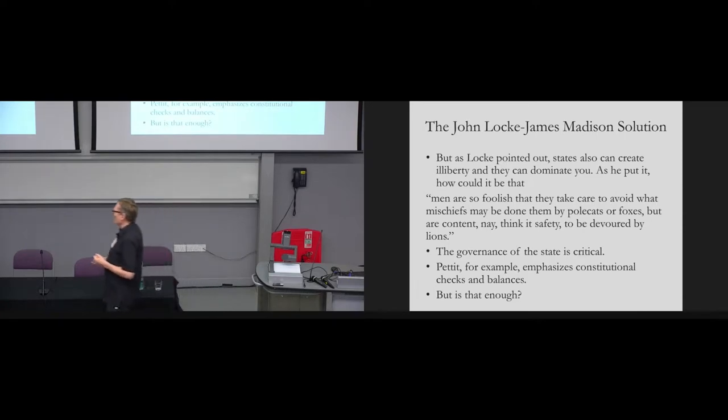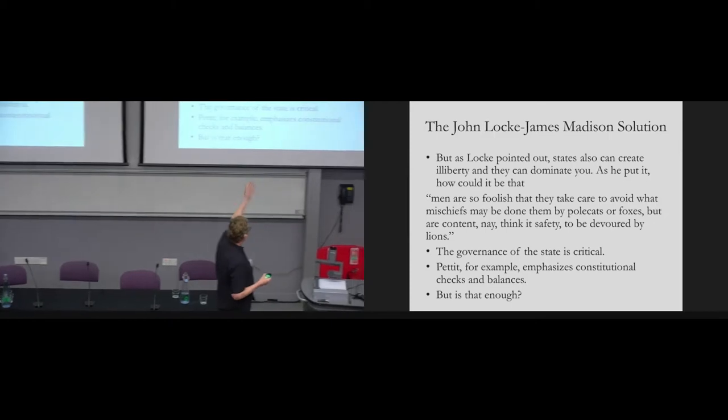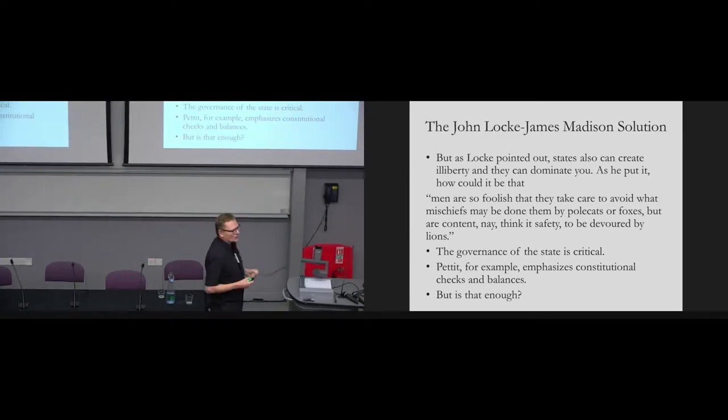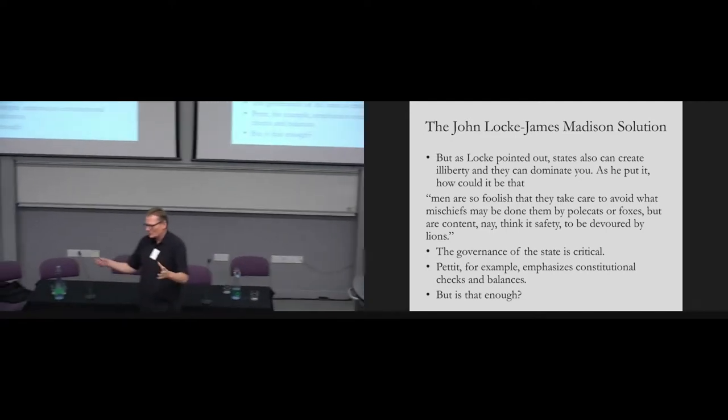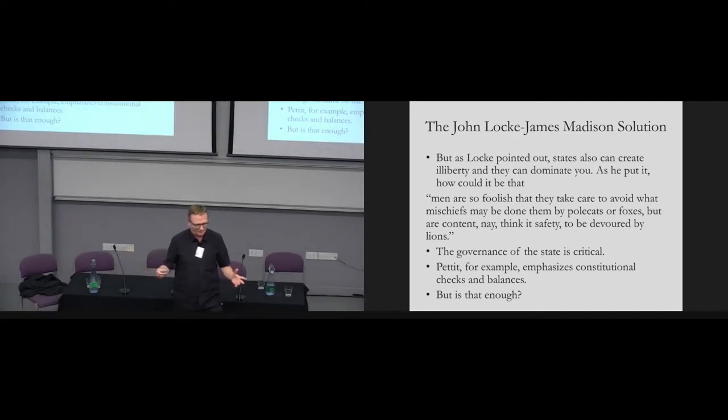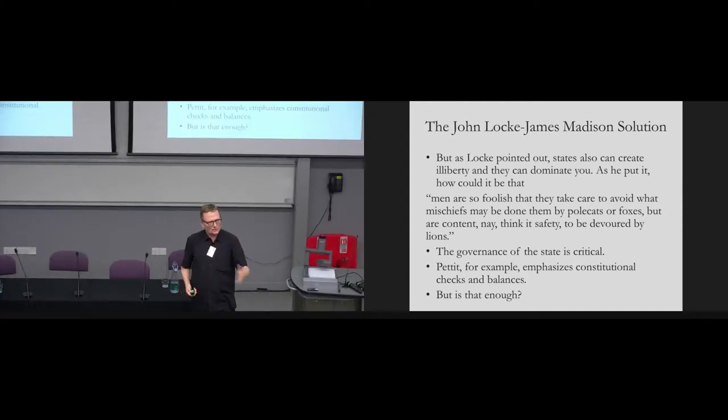But probably all of us think it's not sufficient to have a state, a Leviathan, the way Hobbes conceived of it. We'd also be worried about the governance of the state. It didn't take Locke very long to point that out. And what Locke said, are men so foolish to avoid the mischiefs done by poll cats and foxes that they risk being devoured by lions. The state of war, there's dominance, but it's the dominance of poll cats and foxes. But if you build a state, you created a lion. How do you control the lion?